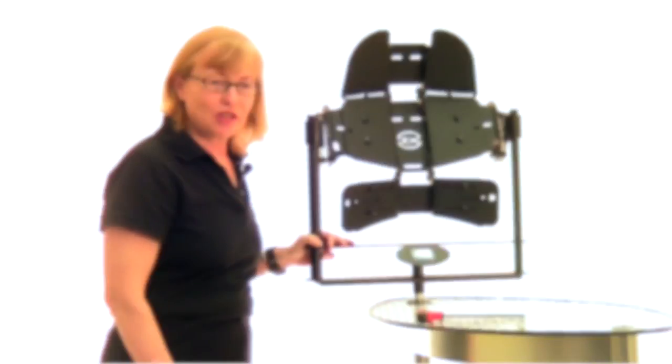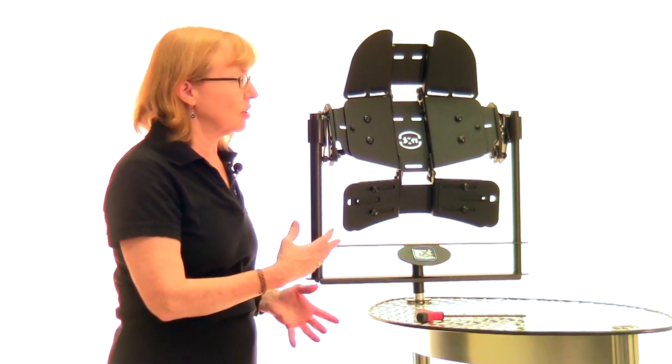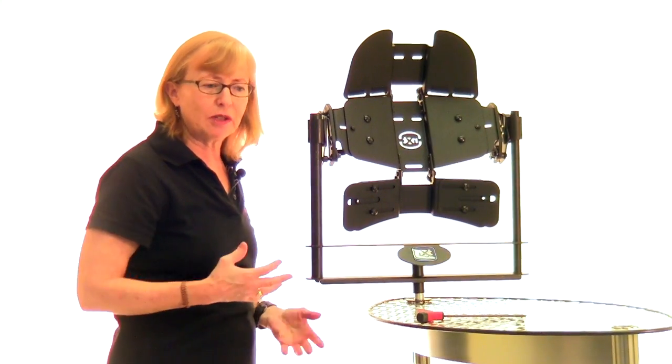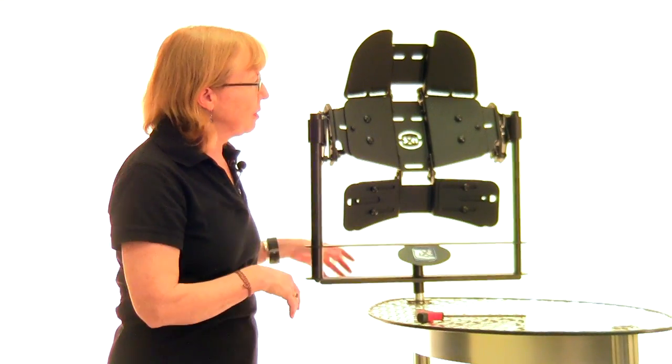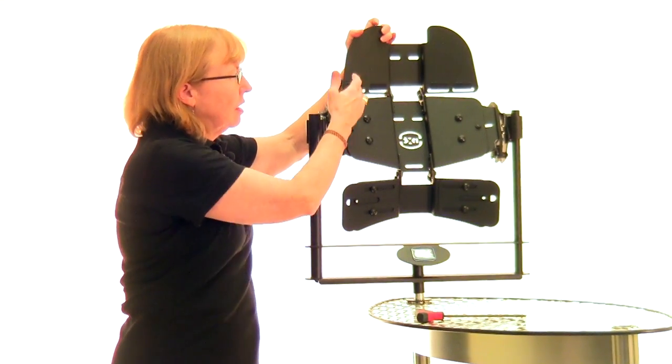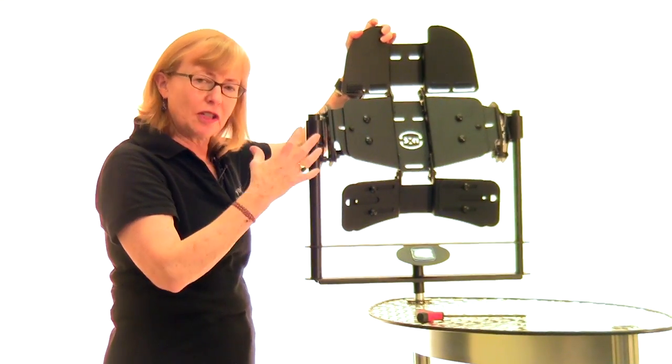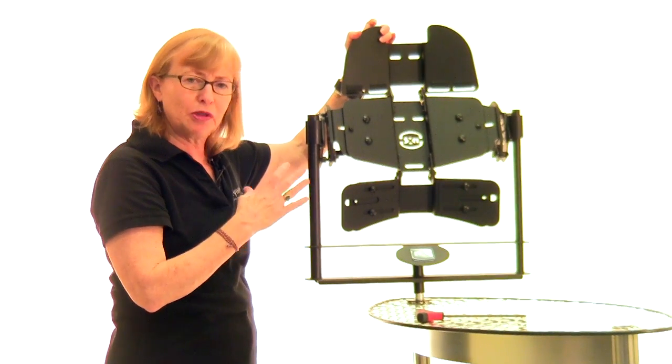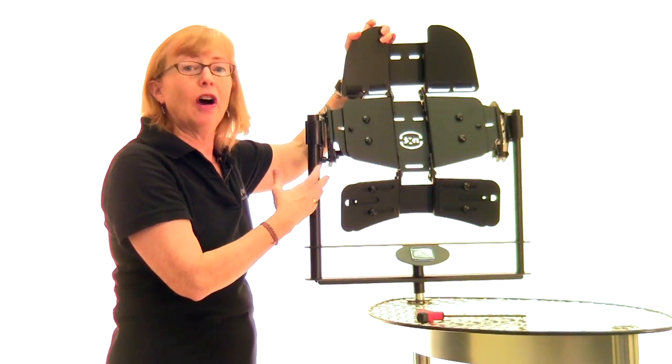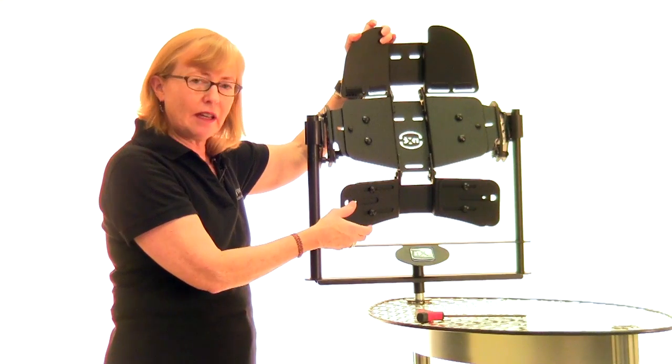So I've removed the foam interface so that I can show you the aluminum shell, which helps describe how the Armadillo works. It's basically made up of three sections that articulate with each other so that you're able to customize an off-the-shelf system for your client.